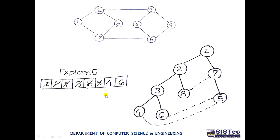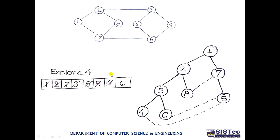Next, we explore node 5. From node 5, we have three options: 6, 4, and 7 — but all three are already present in the queue. So we create partial connections from 5 to 6 and 5 to 4. Then we explore node 4. From node 4, options are 3 and 5, both already explored. Node 4 has a direct connection to 3 and a partial connection to 5.